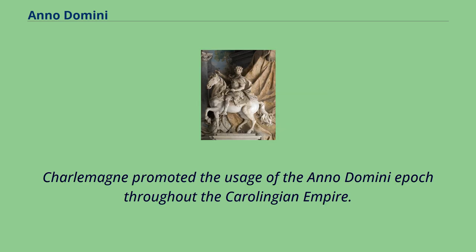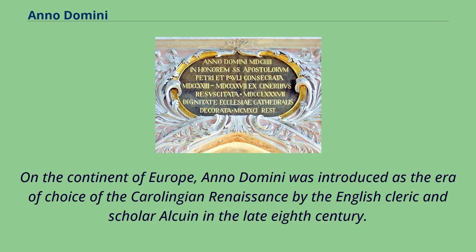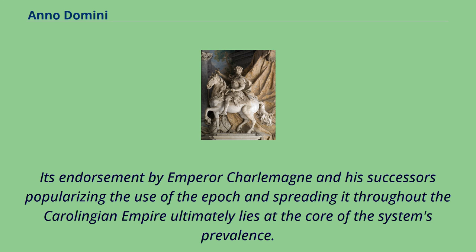Charlemagne promoted the usage of the Anno Domini epoch throughout the Carolingian Empire. On the continent of Europe, Anno Domini was introduced as the era of choice of the Carolingian Renaissance by the English cleric and scholar Alcuin in the late 8th century. Its endorsement by Emperor Charlemagne and his successors, popularizing the use of the epoch and spreading it throughout the Carolingian Empire, ultimately lies at the core of the system's prevalence.